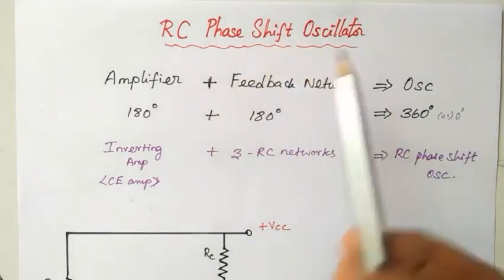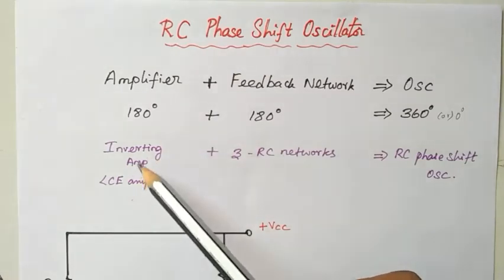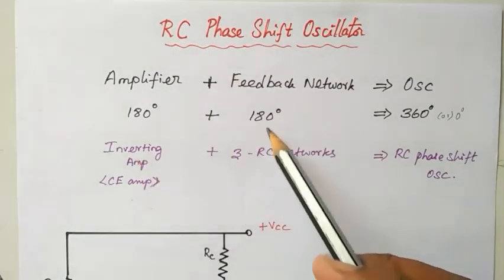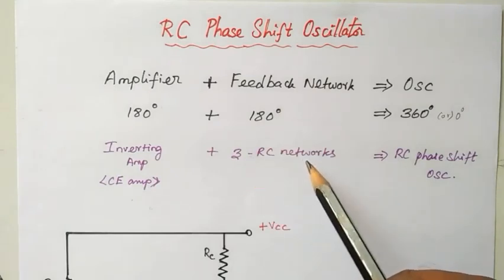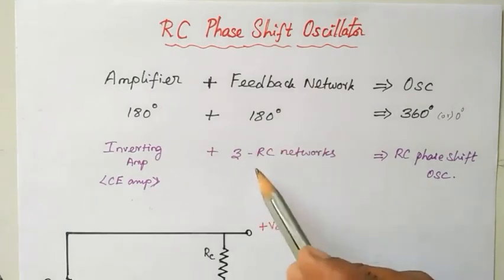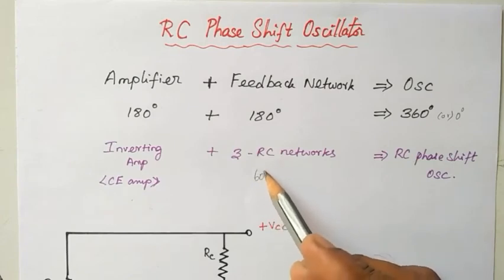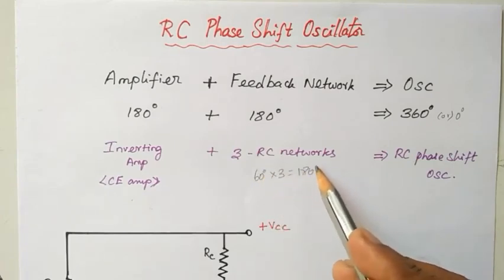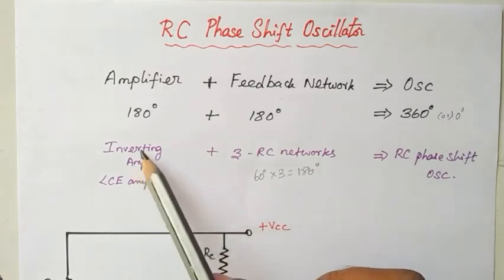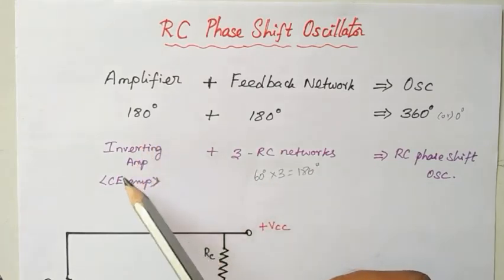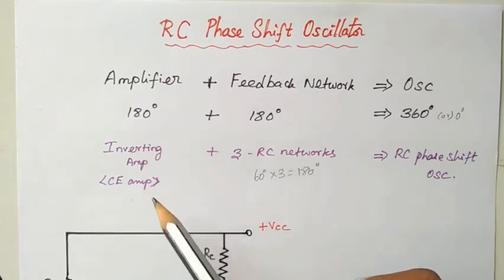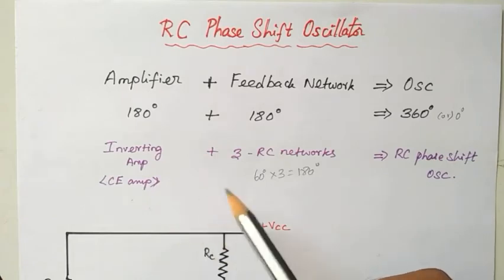In the RC phase shift oscillator, there is an inverting amplifier used — a common emitter amplifier. For the feedback network, we are going to use three RC networks. Each RC network produces a 60-degree phase shift, so 60 degrees times three networks becomes 180 degrees of phase shift. The remaining 180-degree phase shift is produced by the amplifier, because a common emitter amplifier generally produces an output signal which is 180 degrees out of phase with the input signal.